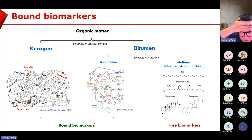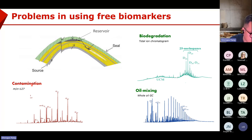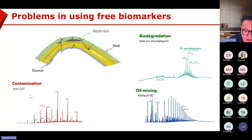We already use a lot of free biomarkers and we have the biomarker guide from Kenneth Peters. Why do we bother to check the bond biomarkers? Because we might have some problems when we use free biomarkers. In a petroleum system, we often come across drilling mud contamination on cuttings, so the biomarkers of the cuttings can be easily contaminated. From the reservoir, biodegradation can alter free biomarkers, and oil mixing from different sources can also mess up the biomarker fingerprints. That's why we have to check the bond biomarkers.